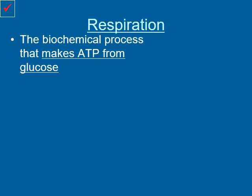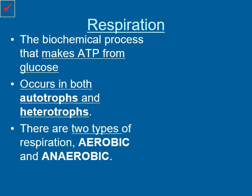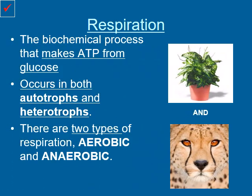Respiration is the biochemical process that makes ATP from glucose. This occurs in both autotrophs and heterotrophs — in any organism that has a mitochondria. There are two primary types of respiration: aerobic and anaerobic. They're carried out by both plants and animals, autotrophs and heterotrophs. We'll be discussing both aerobic and anaerobic as we go through, but we'll be starting off with aerobic.